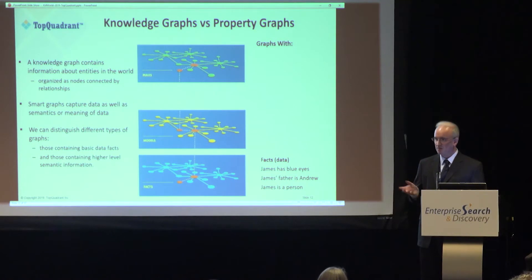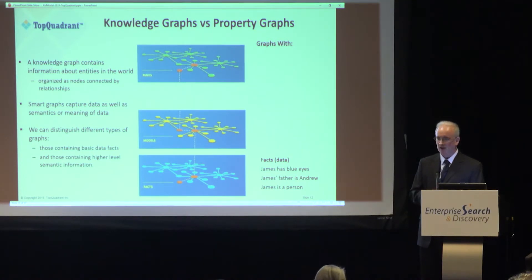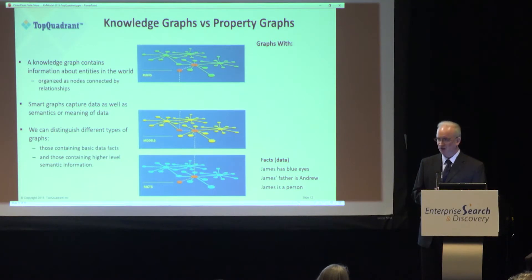This could be James Bond: James has blue eyes, James's father is Andrew, and James is a person. This is all we know about James.